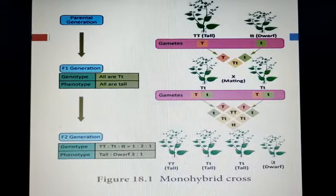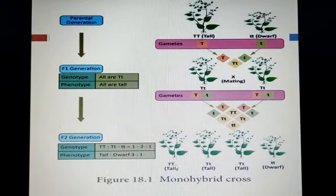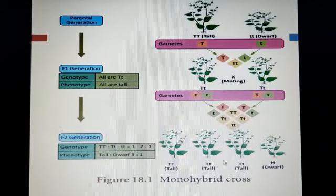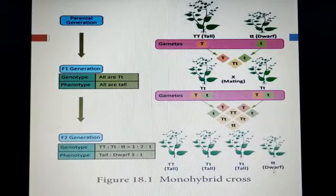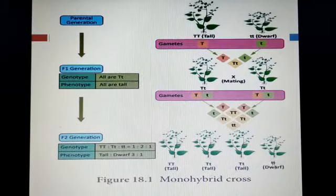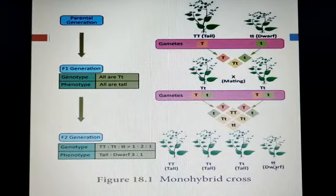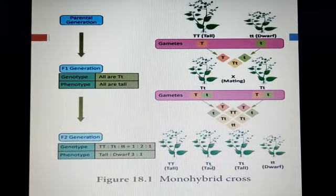Somewhere the recessive character that was hidden in F1 generation reappears in F2 generation. So a homozygous dwarf plant appears. Three of your plants are tall — one is homozygous tall (phenotype obviously tall) and two are heterozygous (in heterozygous condition the dominant character appears, so phenotype is tall). One plant is dwarf. So three plants are tall — one homozygous and two heterozygous — and one is dwarf. The dwarf character that was present in the seed reappears in the second generation.